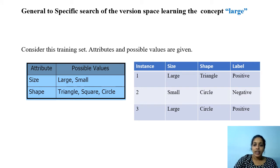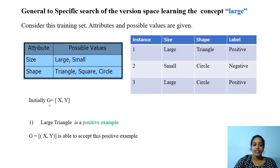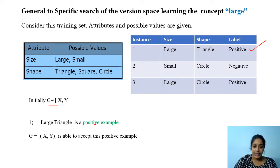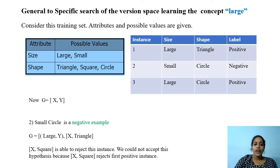Now consider the same set of attributes and possible values, but with three instances. We find the version space starting from {x, y}. On seeing the first instance, which is positive, we check whether our hypothesis accepts it — it surely does. Our current hypothesis remains {x, y}. The next instance is {small, circle}, which is a negative example.